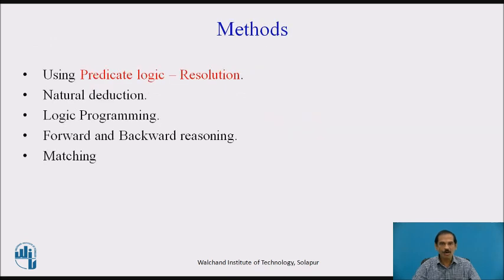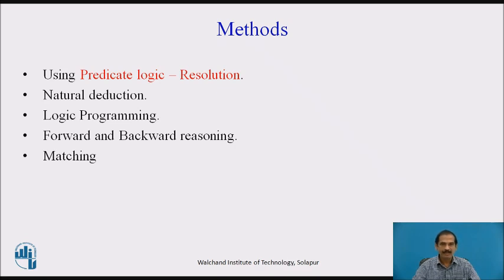The methods we adopt for monotonic reasoning are: represent all your facts in predicate logic, put them into a particular form such as clause form, and then solve the problem with the help of resolution to get inferences. Natural deduction is another form in which we deduce or find a derived representation to represent our goals of reasoning.